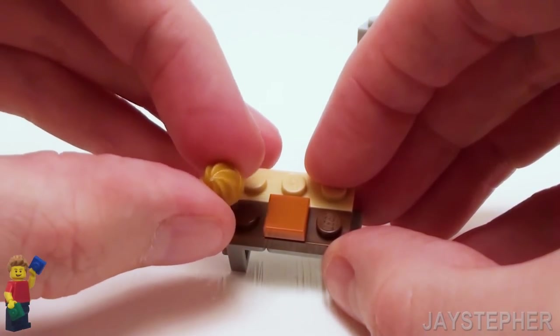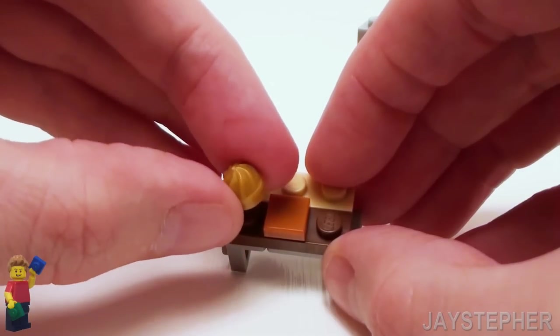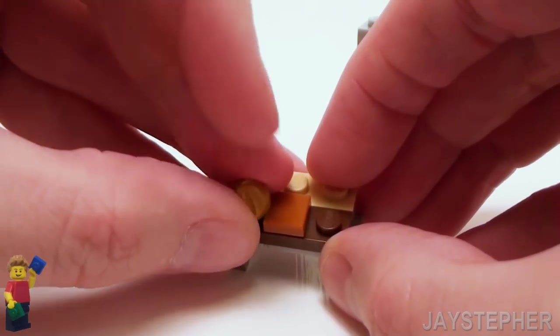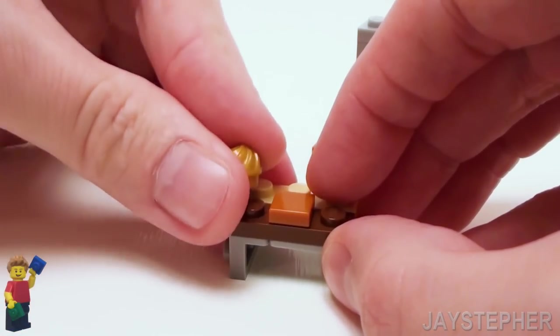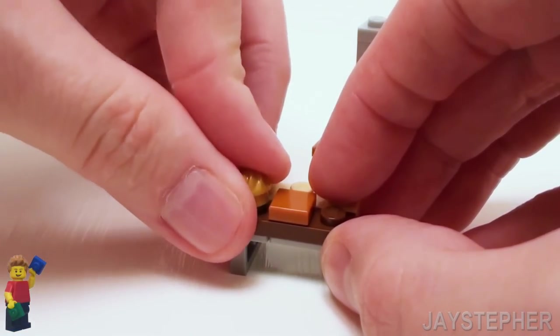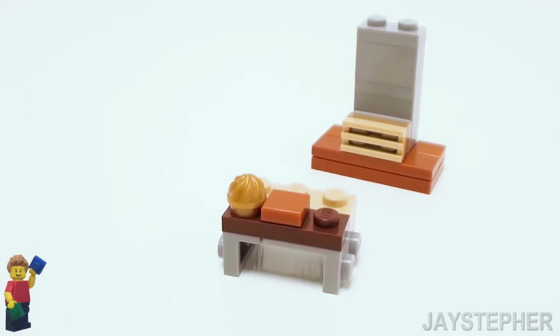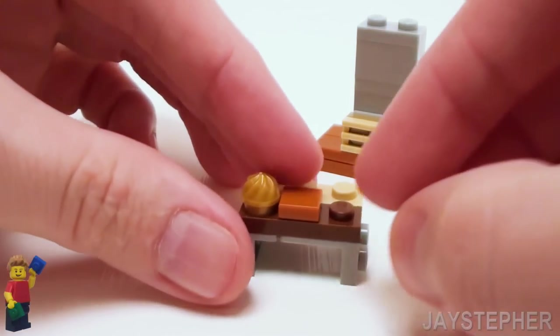Now let's take one of these 1 by 1 ice cream toppers. Place one on the left. A bit of a challenge to get on. And one on the right.